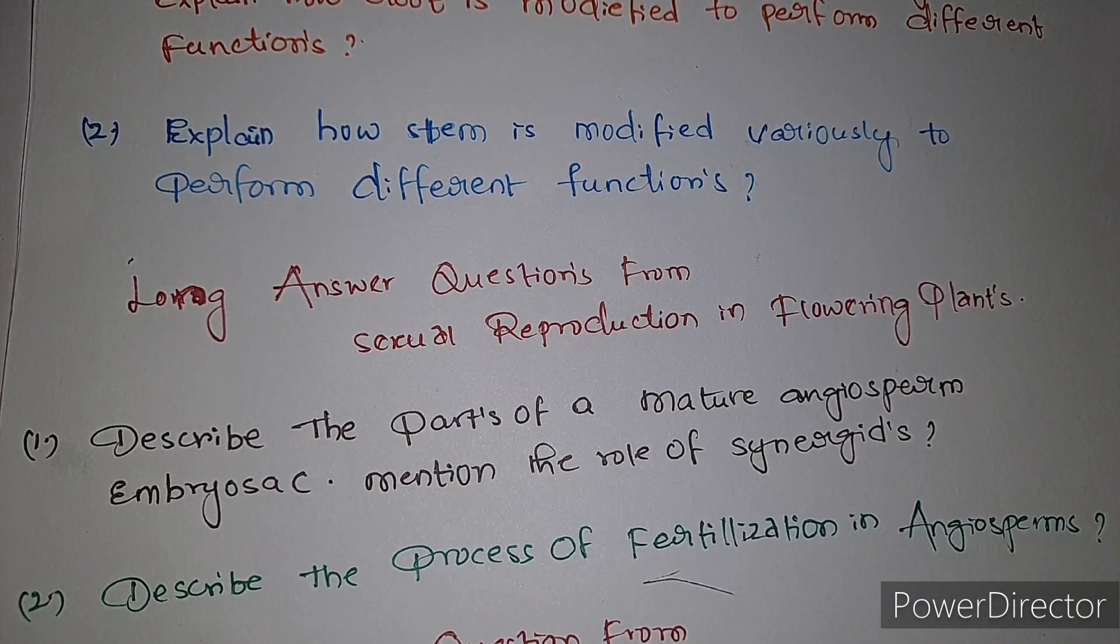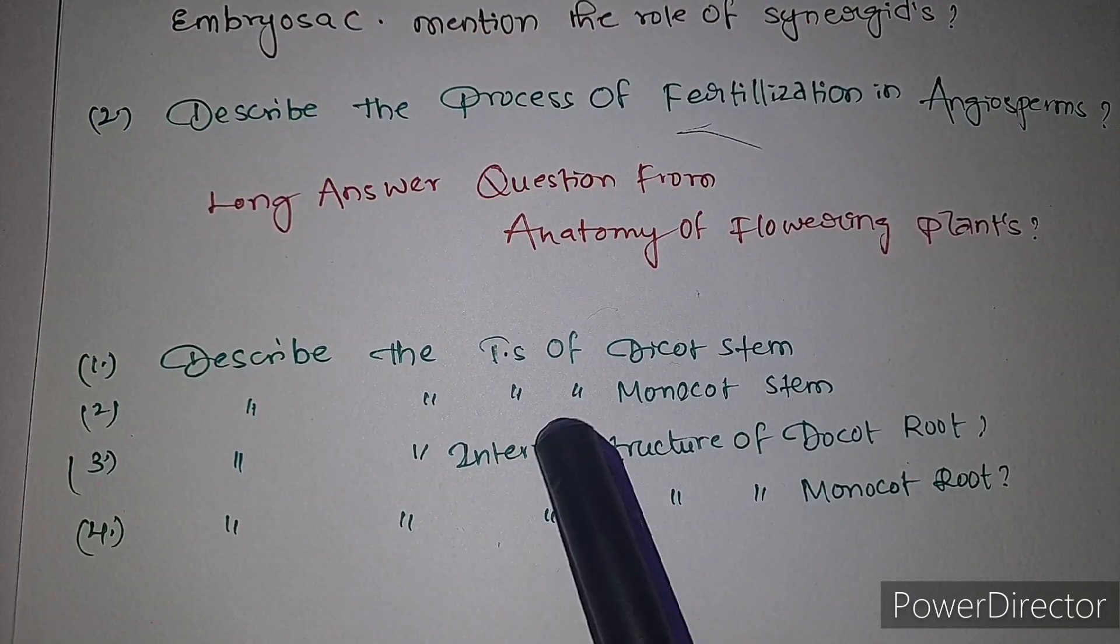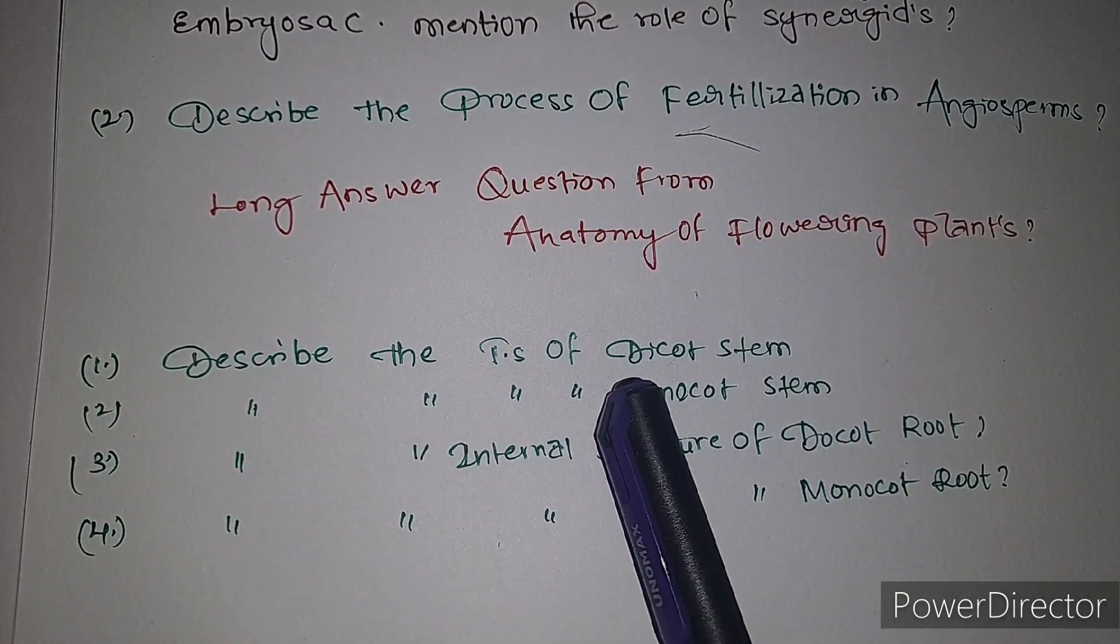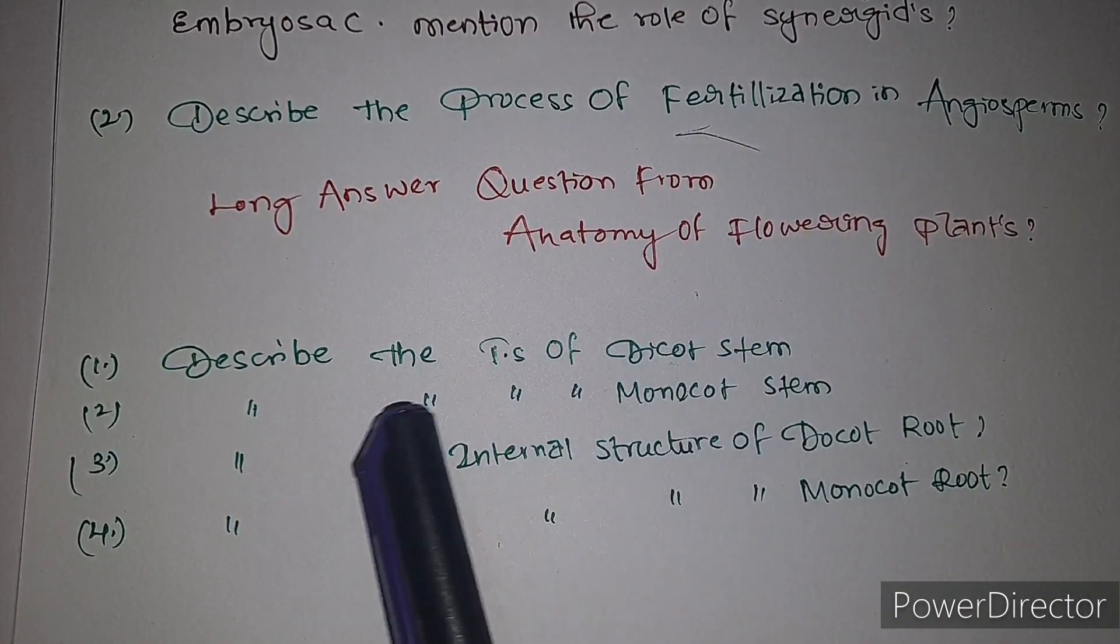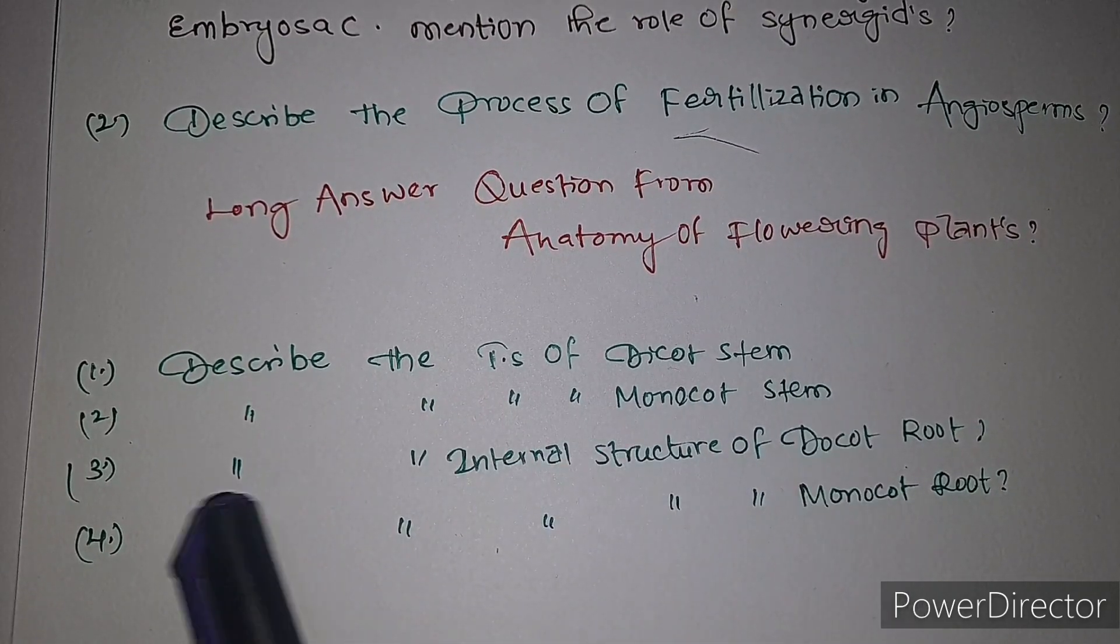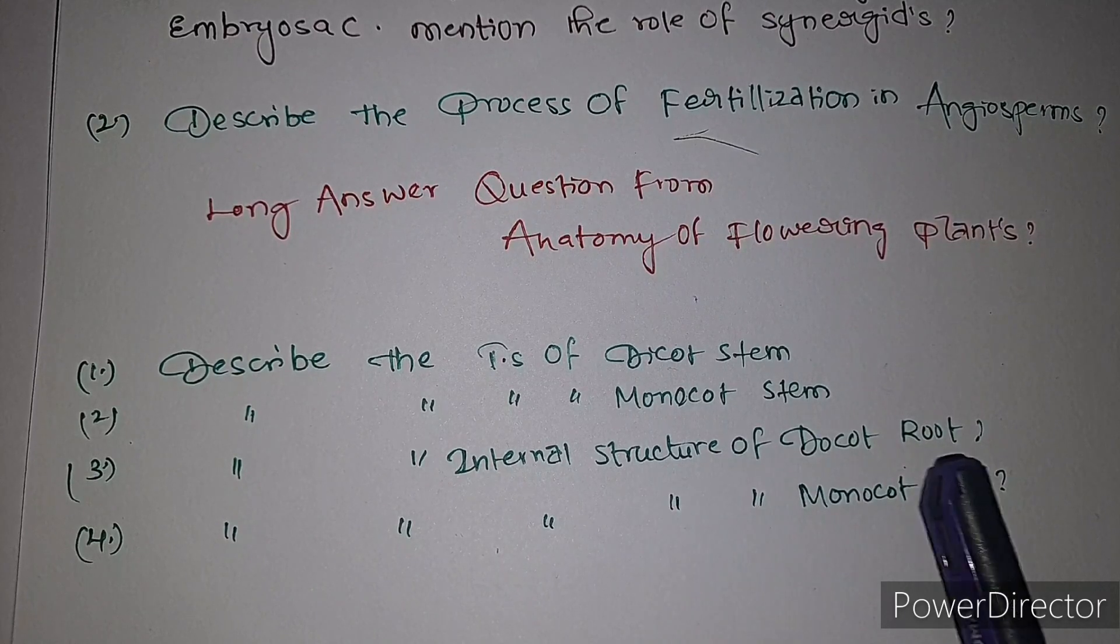Long answer questions from anatomy of flowering plants. First question: describe the transverse section of dicot stem. Describe the transverse section of monocot stem. Describe the internal structure of the dicot root. Describe the internal structure of monocot root.